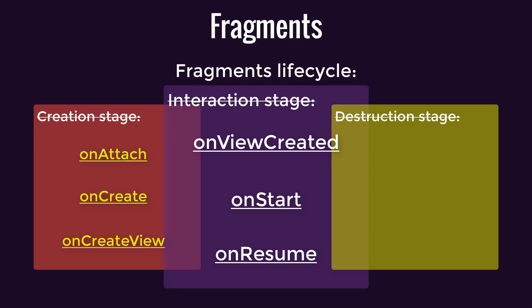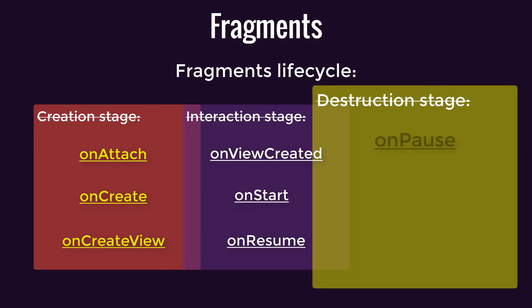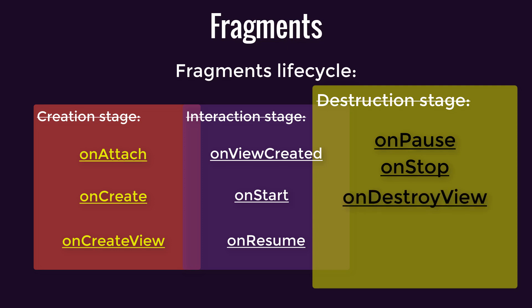Moving to the interaction stage, the onViewCreated callback comes after onCreateView — this is a good spot to interact with the fragment's UI elements. The onStart and onResume are similar to the activity callbacks. onStart marks when the fragment becomes visible to the user, followed by onResume, which signals the fragment is active and ready for user interactions. In the destruction stage, onPause indicates the fragment is losing focus but still visible, followed by onStop where it's no longer visible. onDestroyView releases resources associated with the fragment's UI, then onDestroy handles cleanup, and finally onDetach signals the fragment is no longer attached to an activity — the opposite of onAttach.